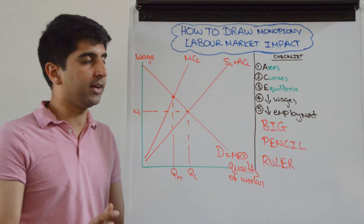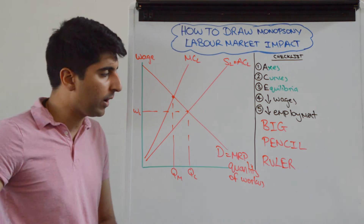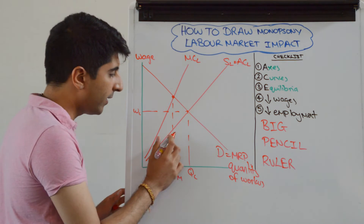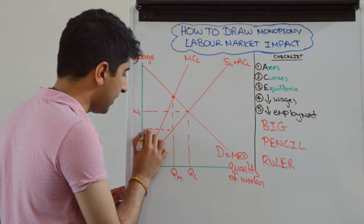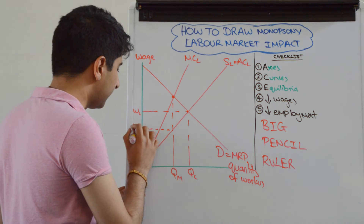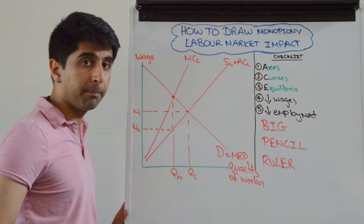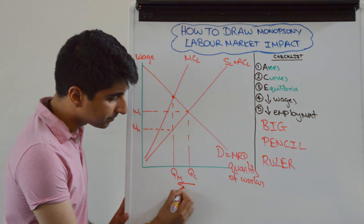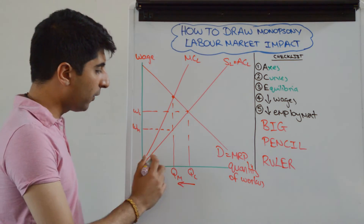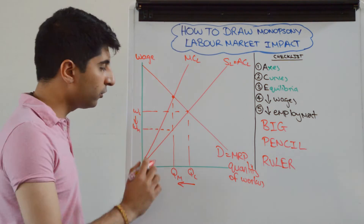We don't read the wage from there — we read the wage from the supply curve. The supply curve of labor is the wage, so going down and reading the wage off there gives us the monopsonist wage WM. If you want to show how employment is reduced and wages are also reduced, feel free to add little arrows there.